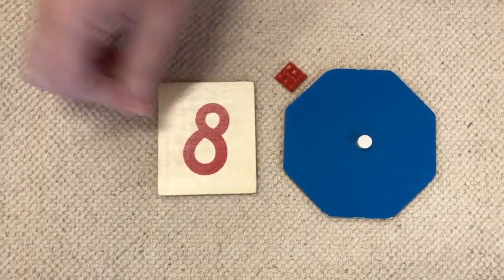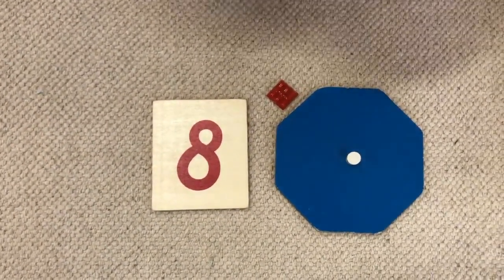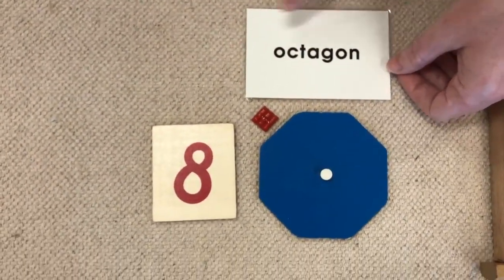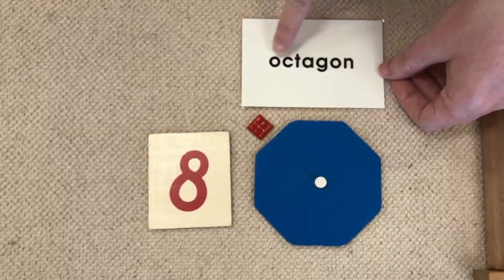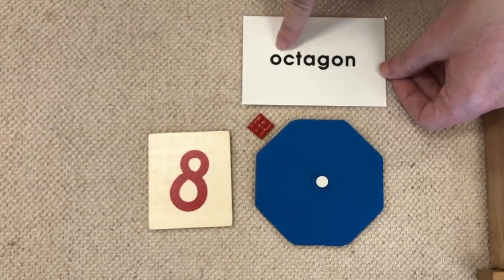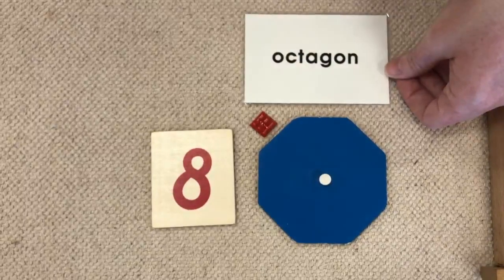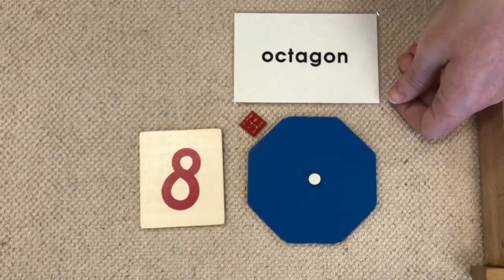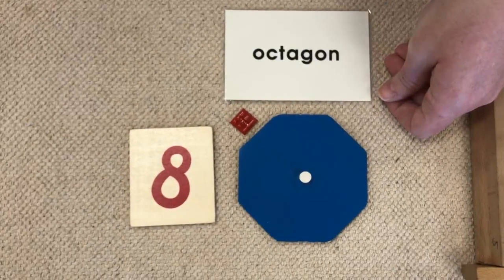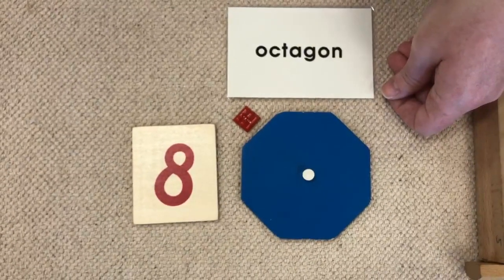An eight-sided polygon is called an octagon. Octagon. When you see this prefix, that's the beginning of a word, when you see the prefix oct, that means eight. Do you know of an animal that starts with the prefix oct and it has eight legs? An octopus.